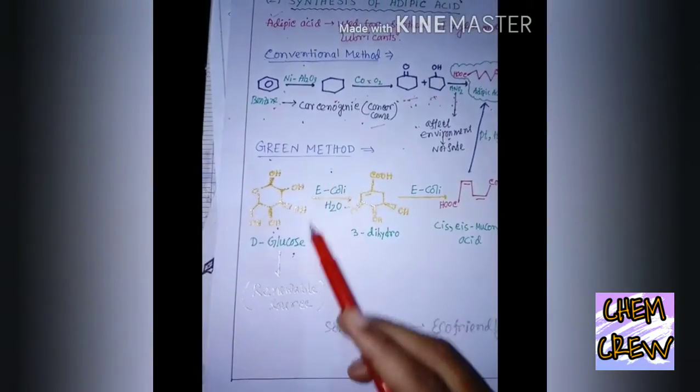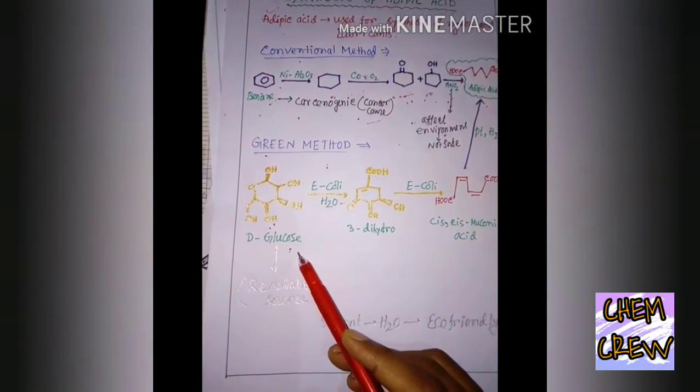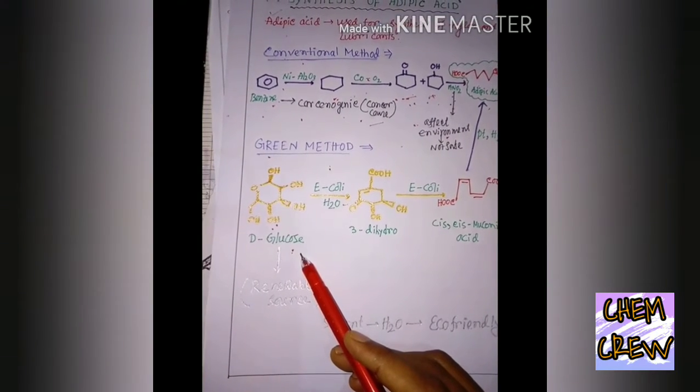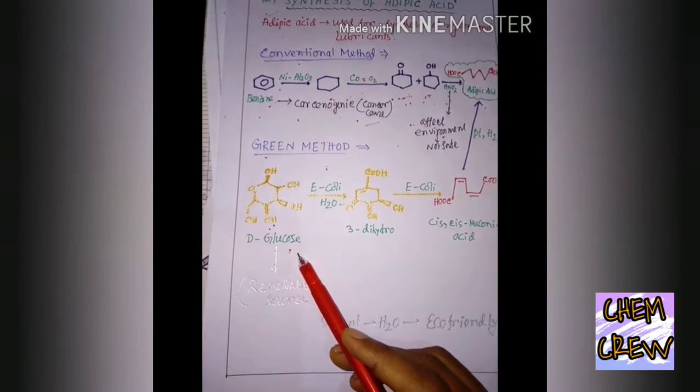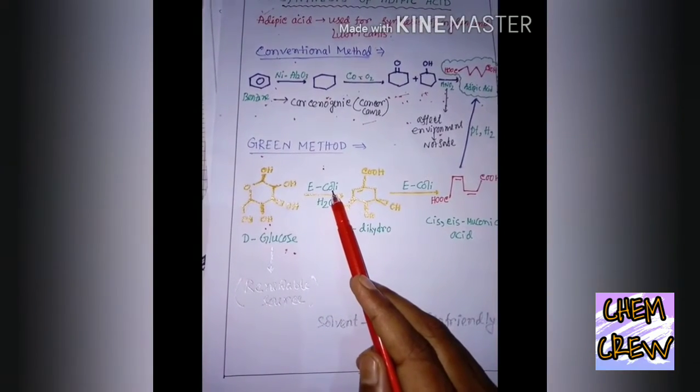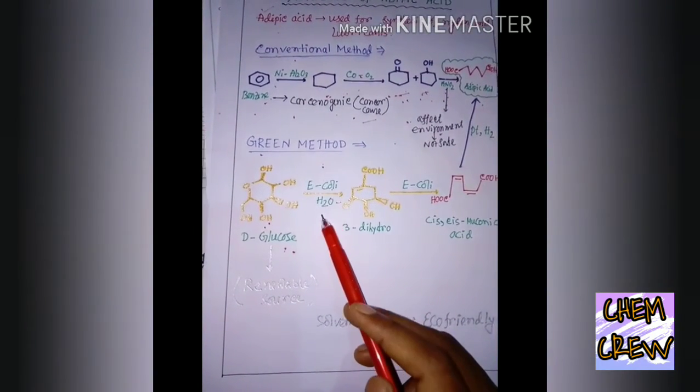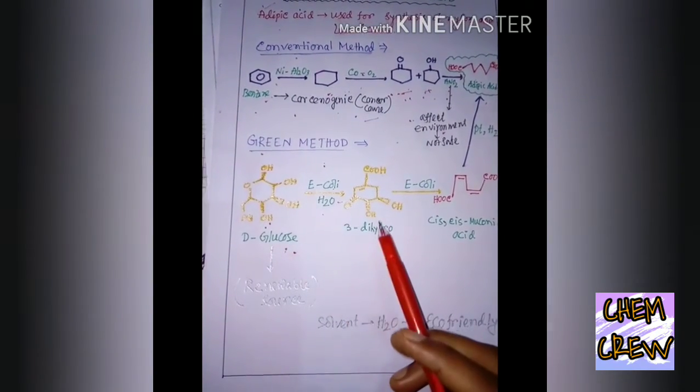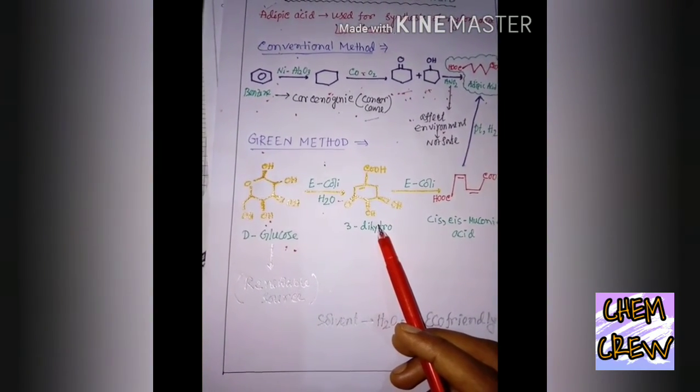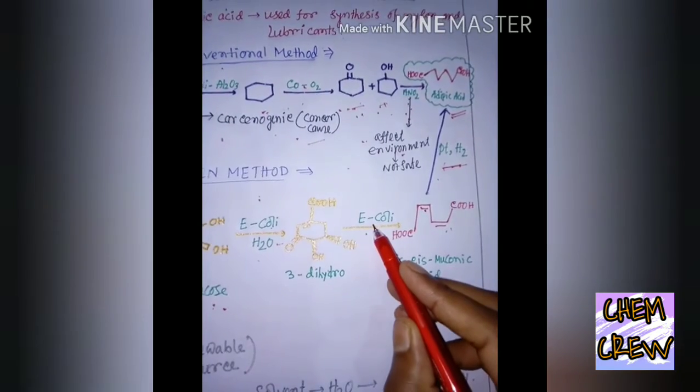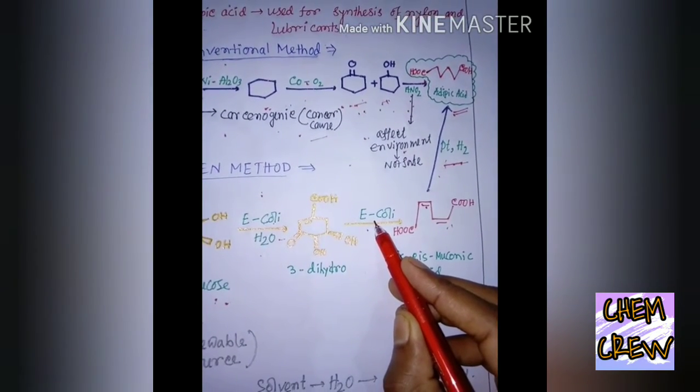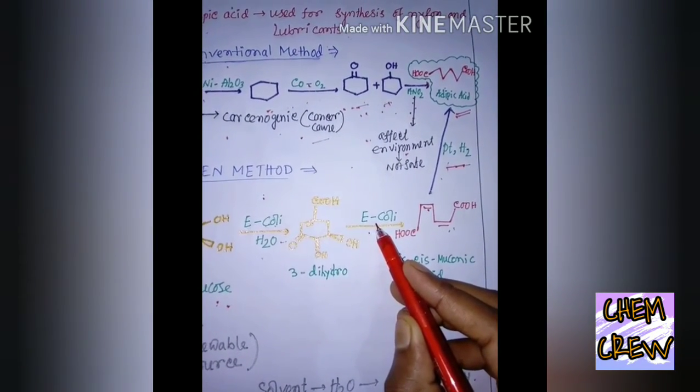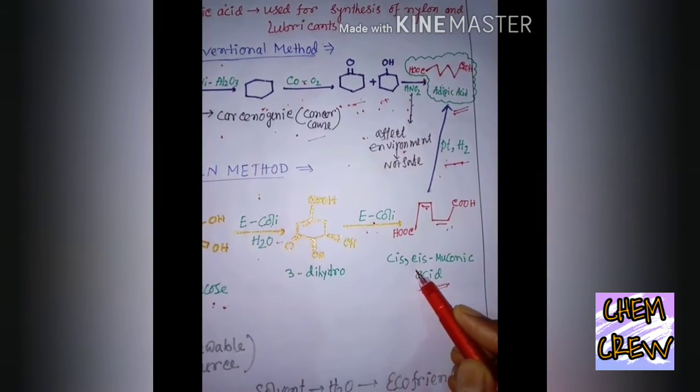In the green method, we use D-glucose. It is a renewable source. So, here in presence of E. coli and water is a solvent, and it is changing into this. And again E. coli acts as a catalyst and it is changing into cis,cis-muconic acid.